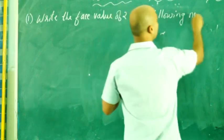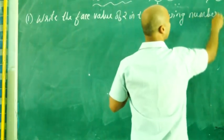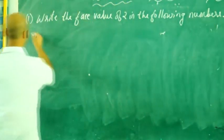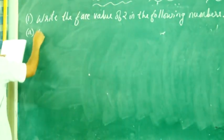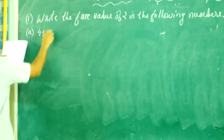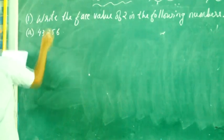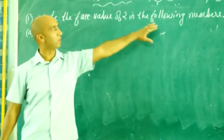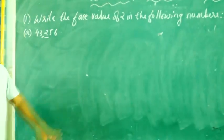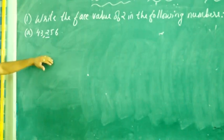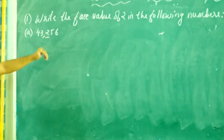Let me make following numbers. So let us write the face value of 2 in the following numbers. So this is the number, 13,256. We have to write what? The face value. So to write the face value, we will see the number which is underlined. Which is underlined? That is 2.